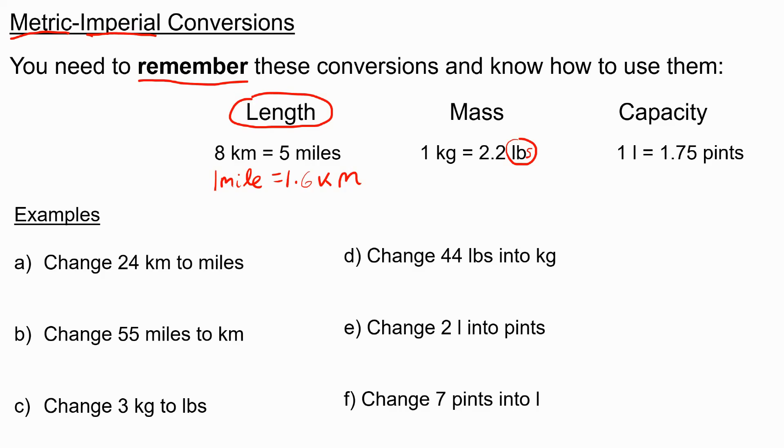Here are some examples of how we would use this. 24 kilometers into miles, if I want to do this conversion without a calculator, I would say, well, 8 kilometers is approximately 5 miles. If I want to change the 8 into 24, I would need to multiply by 3. So I multiply both sides by 3, and I get that 24 kilometers is 15 miles. These are approximations, but they are quite good.